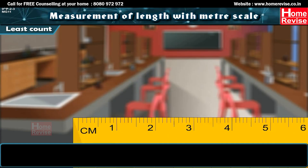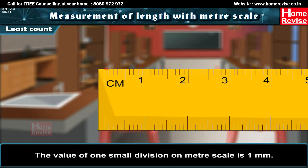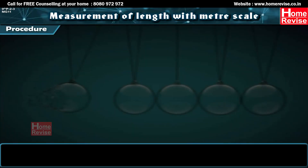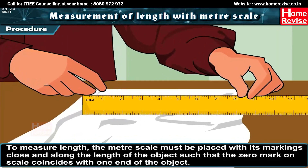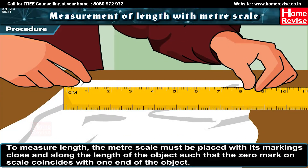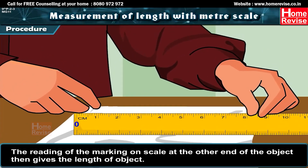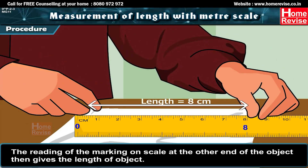The least count of a meter scale is the value of one small division, which is 1 millimeter. Therefore, a meter scale can be used to measure a length accurately up to 1 millimeter. Its least count is 1 mm or 0.1 cm. To measure length, the meter scale must be placed with its markings close and along the length of the object so that the zero mark coincides with one end. The reading at the other end gives the length.